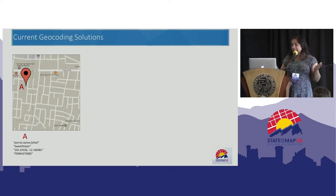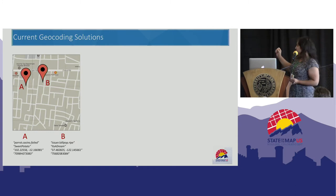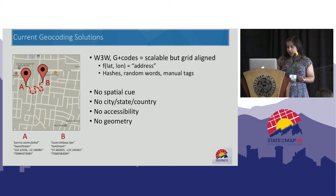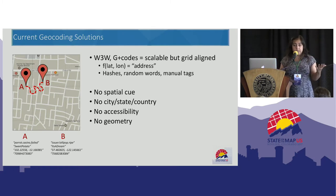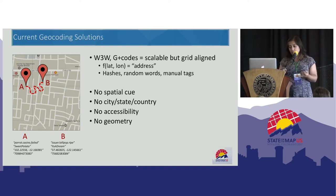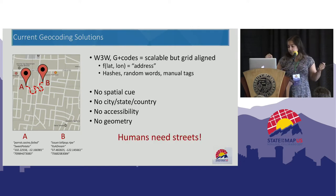Talking about naming things, there are geocoding solutions specifically focusing on naming. If you are at point A and want to go to B, those geocoding schemes are taken from automatic solutions which are scalable, but they are grid-aligned — they assume we can put squares on top of the world and address everything. But those are just hashes, just longitude information presented differently. There's no special cue, no city/state/country information, no accessibility, and no road geometry. As humans, we need streets, and addresses should be based on streets.